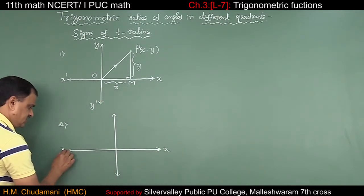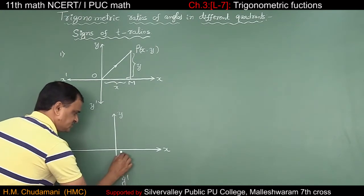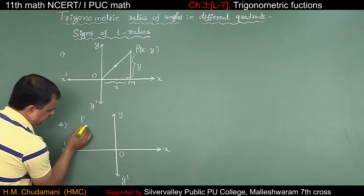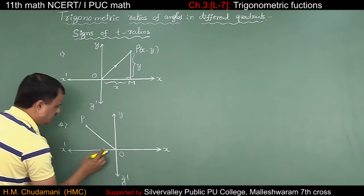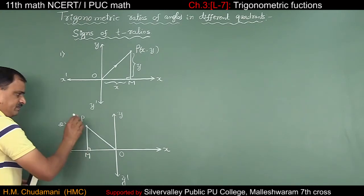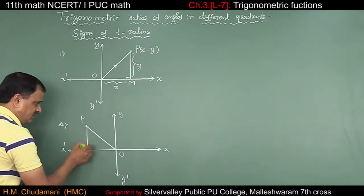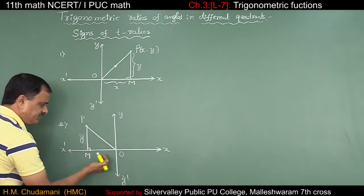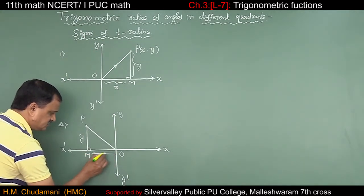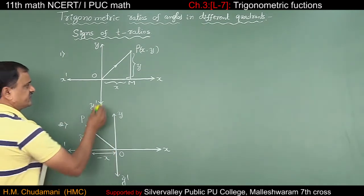In the second quadrant, take point P. Drop a perpendicular PM. The measurement along the x-axis is negative (−x), and PM along the y-axis is positive. The angle theta is shown here. Since x is negative, we examine each ratio.